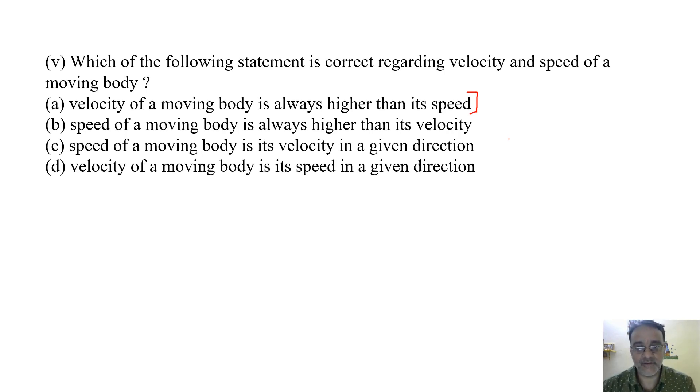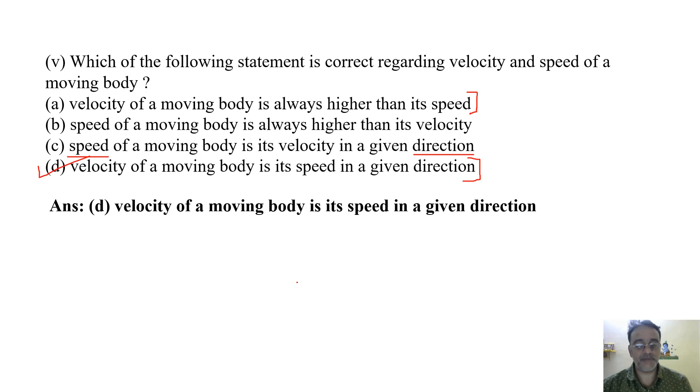The speed of a moving body is always higher than its velocity - this is not sure. The speed of a moving body is its velocity in a given direction. Velocity of a moving body is its speed in a given direction. So this is right, because the speed is not related to the direction. That is why the correct option is the last one. Velocity of a moving body is its speed in a given direction. So the correct option is D. This is the last question of this case study.